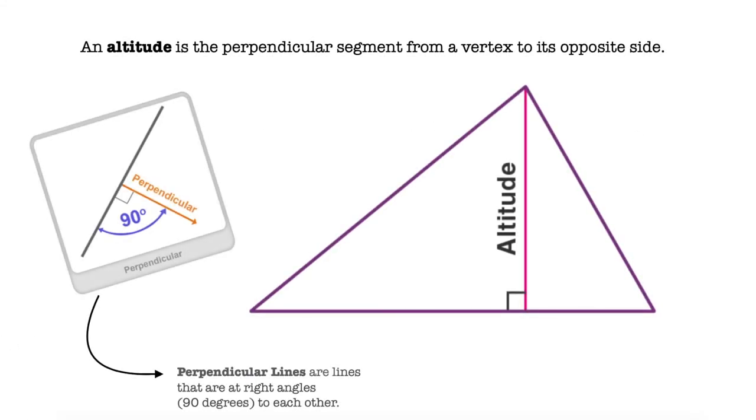What is an altitude? An altitude is the perpendicular segment from a vertex to its opposite side. Remember that perpendicular lines are lines that are at right angles, which means 90 degrees, to each other.